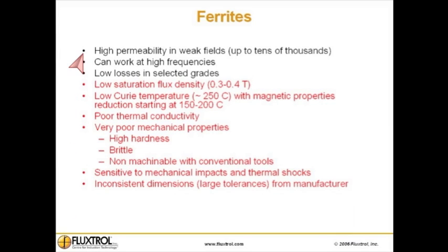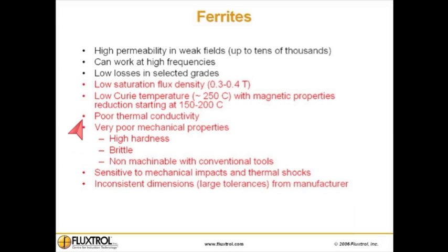Ferrites: high permeability in weak fields, up to tens of thousands. Can work at high frequencies. Low losses in selected grades. However, they have low saturation flux density of 0.3 to 0.4 T. Low Curie temperature of approximately 250 degrees Celsius, with magnetic properties reduction starting at 150 to 200 degrees Celsius. Poor thermal conductivity. Very poor mechanical properties — high hardness, brittle, and non-machinable with conventional tools. Sensitive to mechanical impacts and thermal shocks, and inconsistent dimensions with large tolerances from the manufacturer.